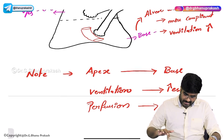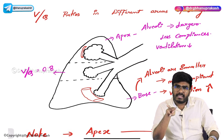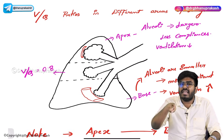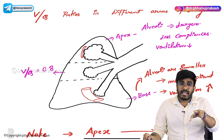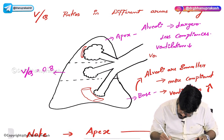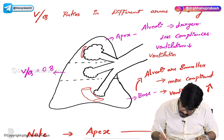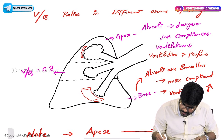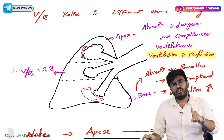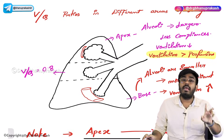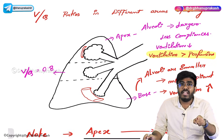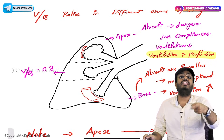In the apex, ventilation is lesser and perfusion is lesser. In the base, there is more ventilation and more perfusion. But on a comparison basis — head to head — in the apex, when compared to perfusion, ventilation is greater. Never get confused: yes, ventilation is lesser in the apex and perfusion is lesser, but when comparing the two, ventilation is greater than perfusion in the apex.